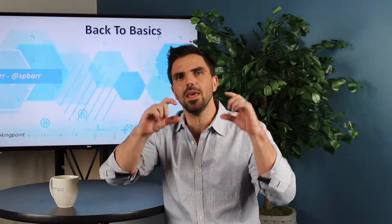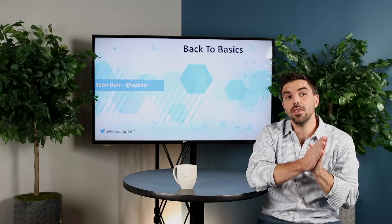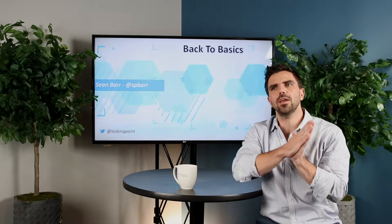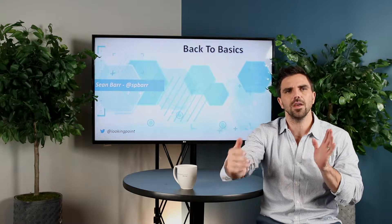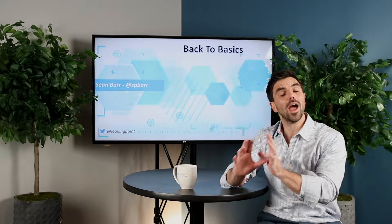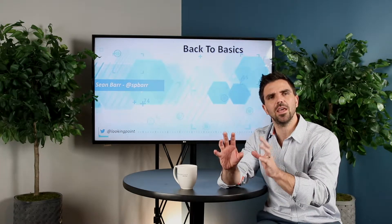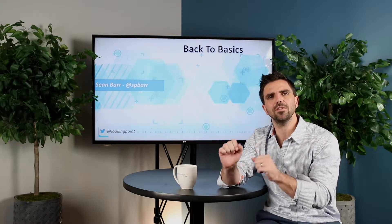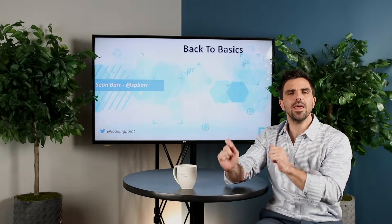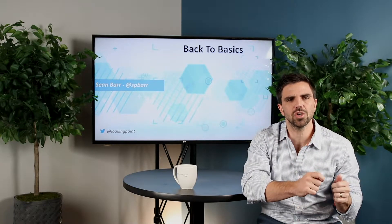Traditionally speaking, the core and distribution sit in the MDF, so those two are close together. The core and the distribution connect in, and then there's cabling out to each of these IDFs. All of your access switches are sitting in those IDFs, and they connect up to the distribution layer in the MDF.